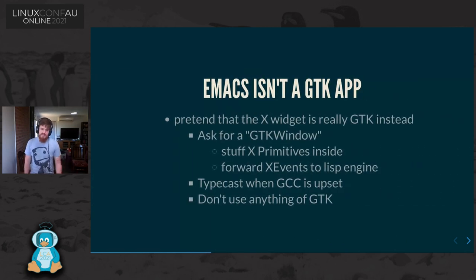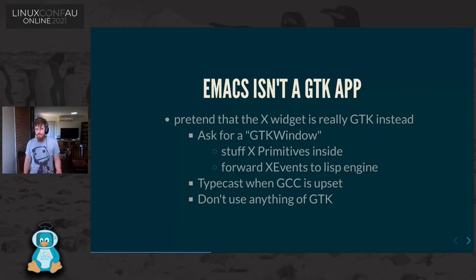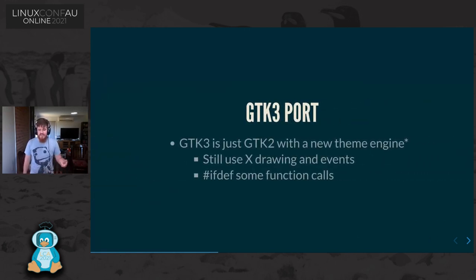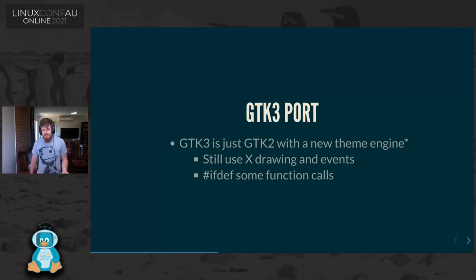At some point we decided to port to GTK in hopes of improving things. The truth is we didn't really port to GTK — we basically just took X and said 'near enough.' We create a GTK window and shove X calls inside it. Any event that comes in is an X event forwarded to the Lisp engine. We basically typecast away any GCC warnings and effectively ignore all of GTK. When GTK 3 was released, we thought we probably should port to that — just ifdef'd it out, still using the same calls, still ignoring GTK.